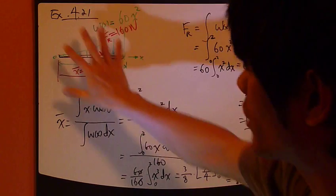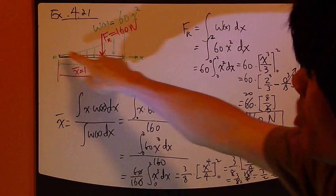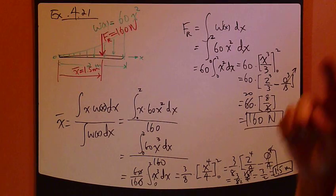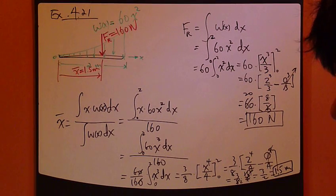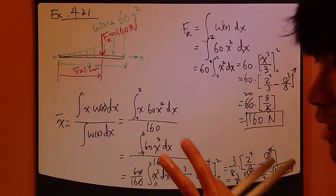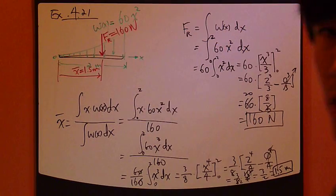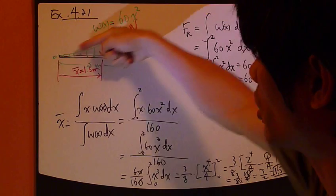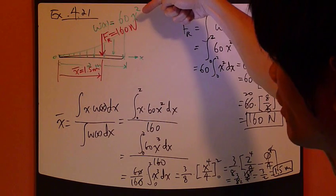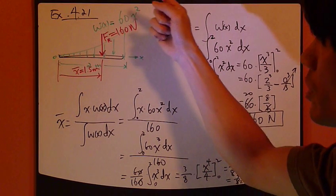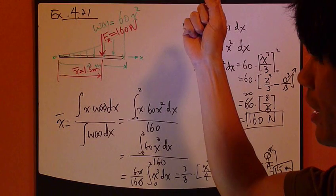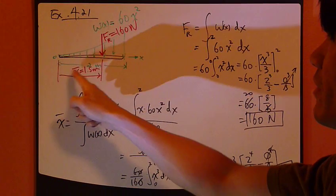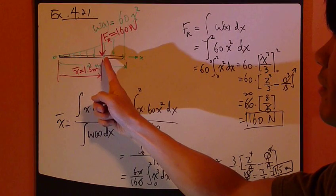Now in this picture right here, it's kind of superimposed, this distributed load and this single equivalent resultant force. You can also think of it as how to balance these two pictures. Let's say you have this bar. You have subjected this force, this force loading, distributed loading right here. If you were to balance it at a single point, it would be exactly at this 1.5 meters point.